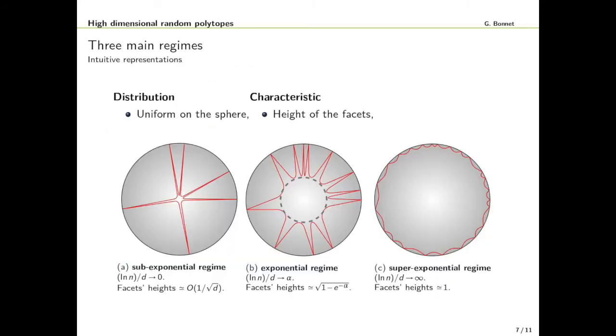Here is an intuitive representation of the previous theorems that I have presented. This is a two-dimensional representation of a high dimensional phenomenon. The red curved segments represent the facets of the high dimensional polytope. The extremities are on the sphere because they represent the vertices of the random polytopes which are distributed on the sphere. The height of the facets correspond to the distance between the origin and the red curved segments. That's why we need to curve the segments in the two-dimensional representation.